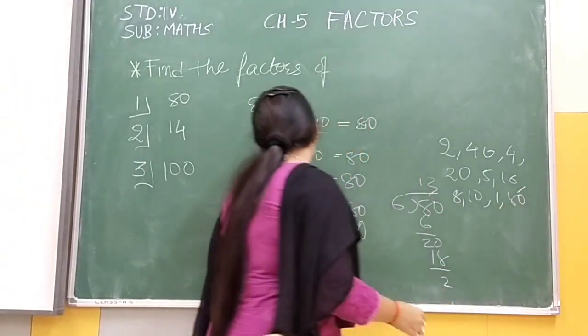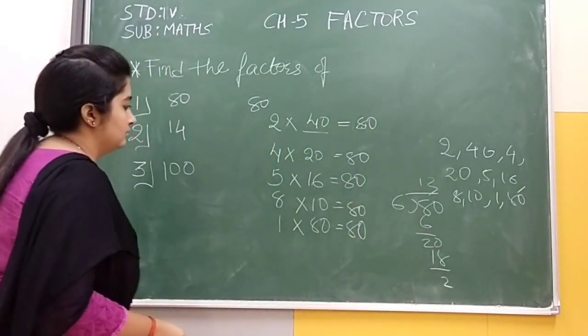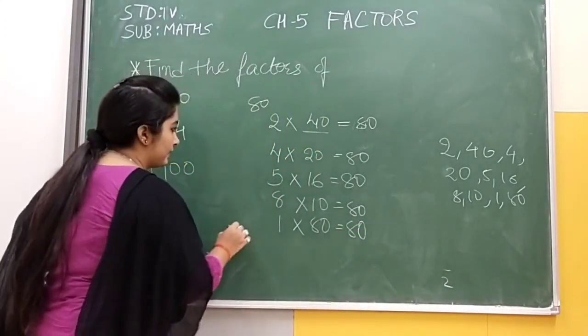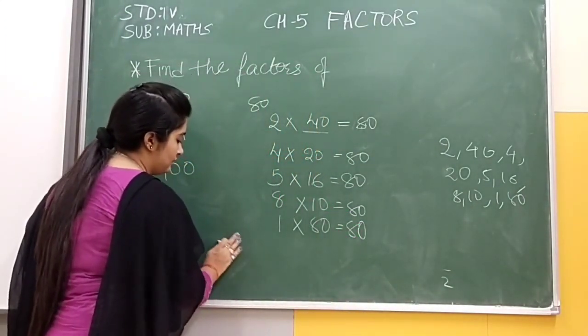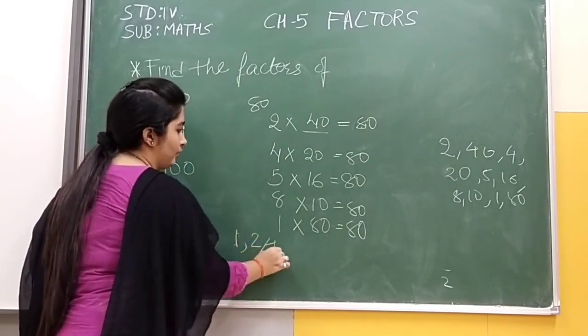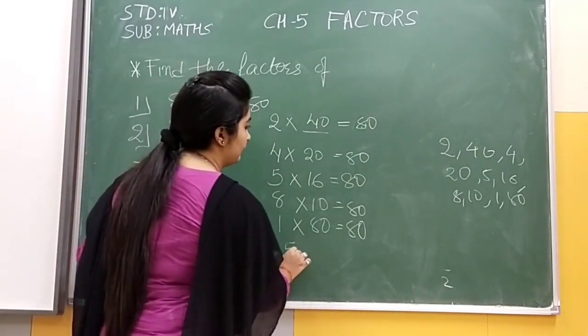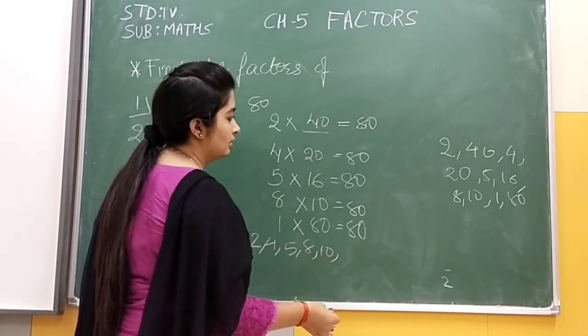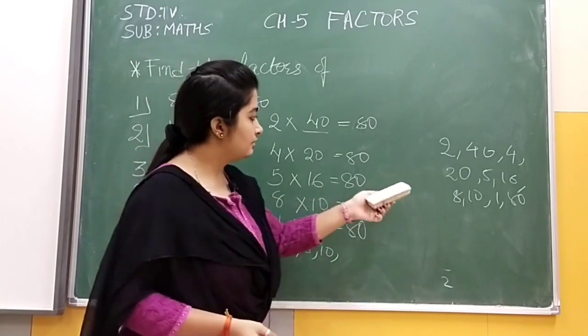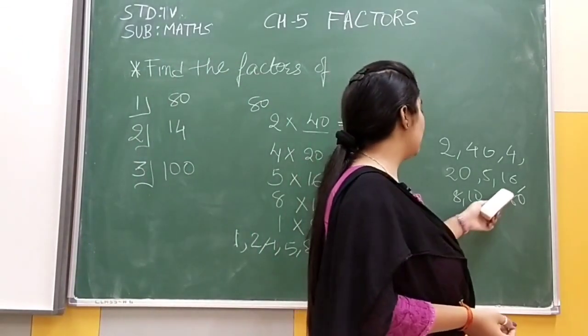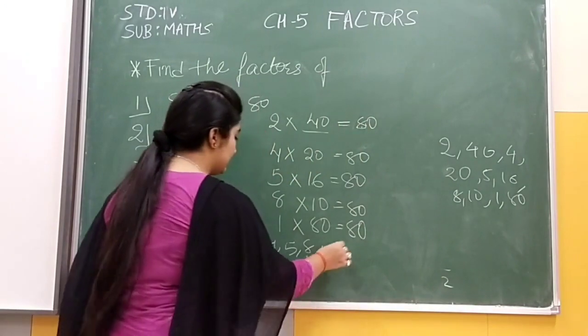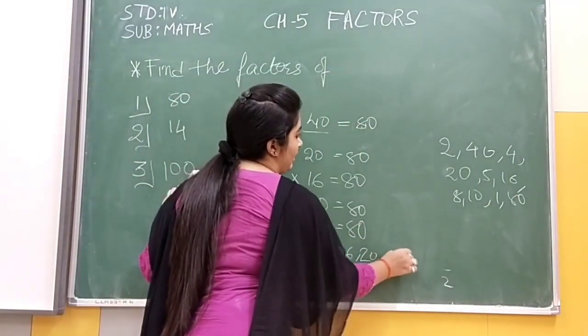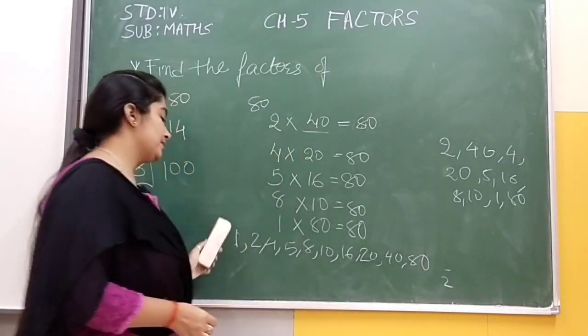Now we will write it in ascending order. Factors of 80 are 1, 2, 4, 5, 8, 10, then 16, 20, 40, and 80.